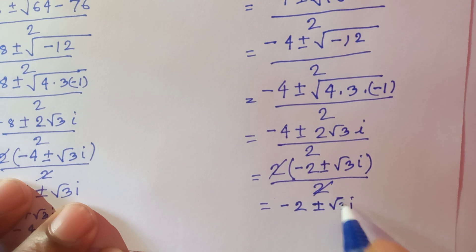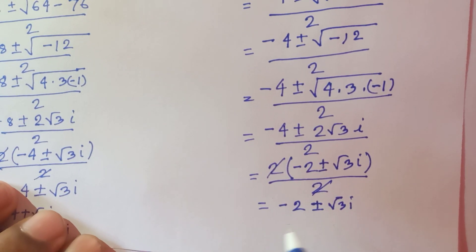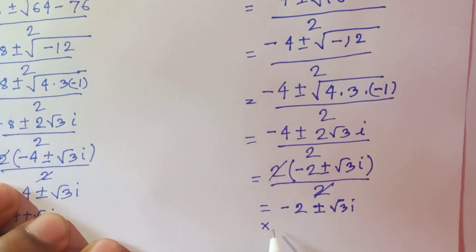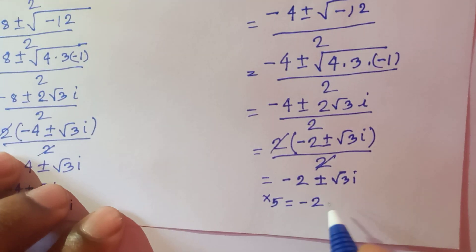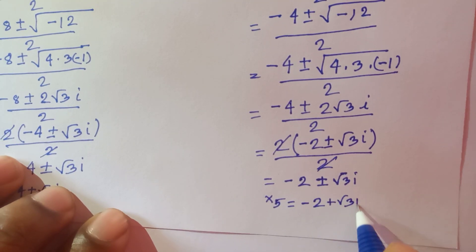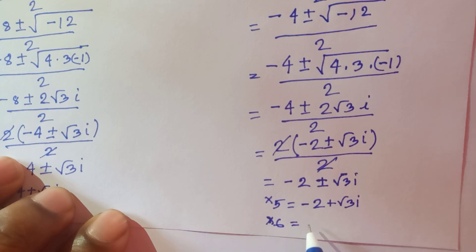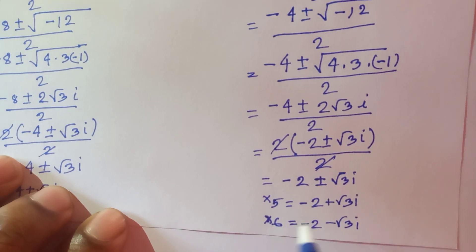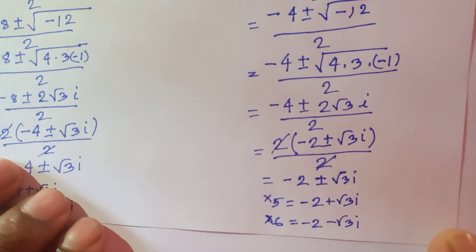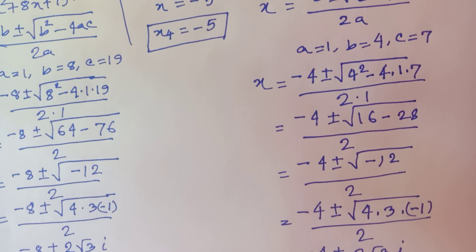Because of the plus or minus, we have two solutions: x₅ equals minus 2 plus root 3 i, and x₆ equals minus 2 minus root 3 i. These are all the values of x for this equation. Thanks for watching — please subscribe to my channel for more videos. Bye bye.